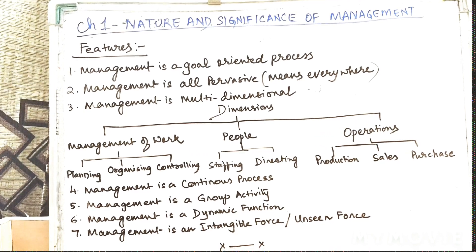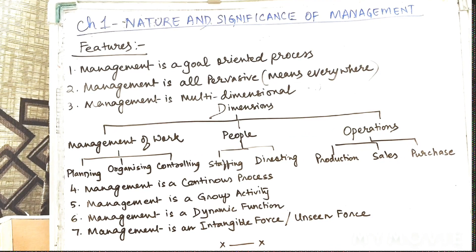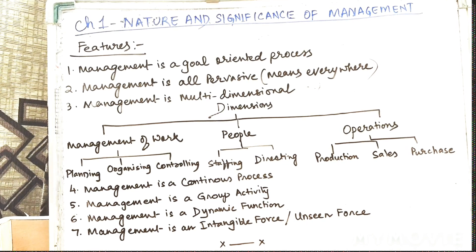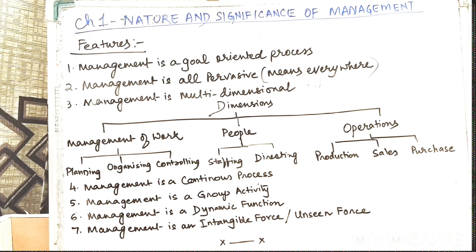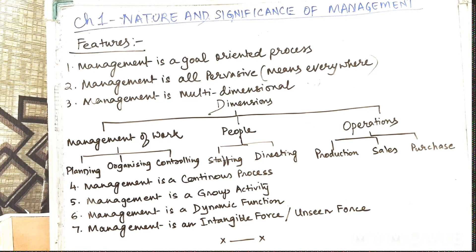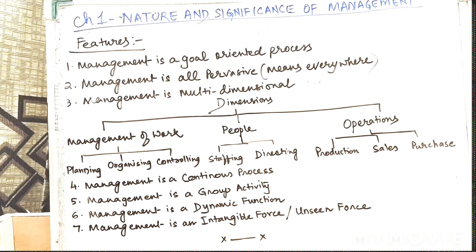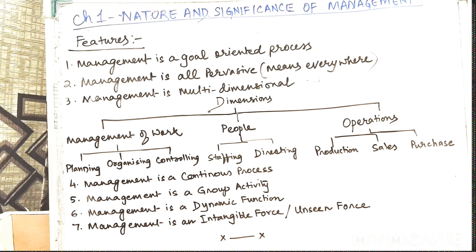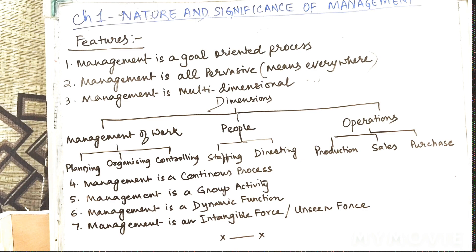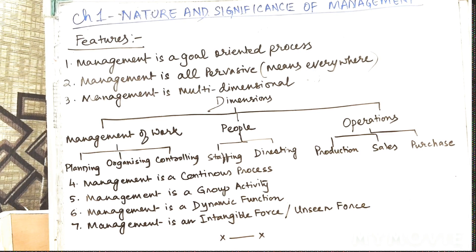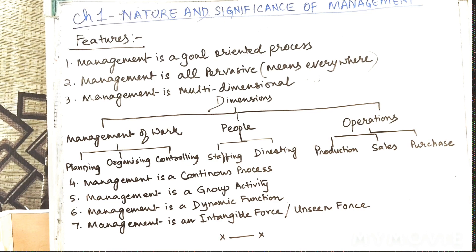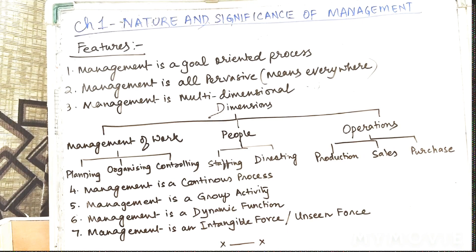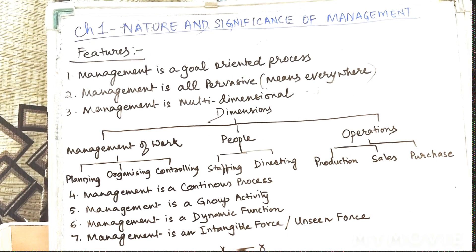The last one: management is an intangible force. Intangible means it cannot be seen, but its presence can be felt. You can feel it when targets are achieved, employees are happy and motivated, there is orderliness and discipline in an organization, and the company is following a progressive rate. This is where management is positive and working. But when a company faces losses or workers go on strike, you can understand that there is mismanagement. These are the features of management. Thank you very much.